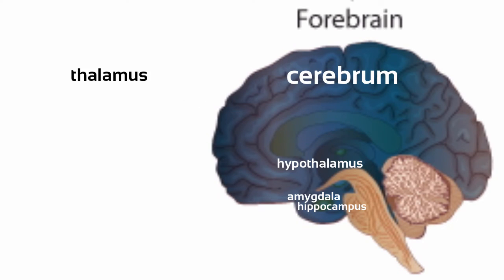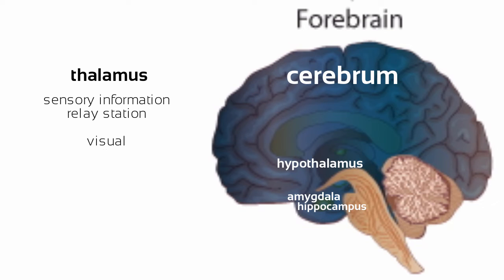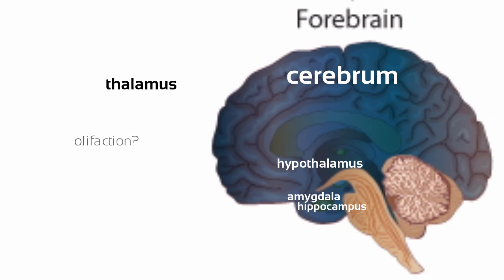The thalamus serves as a relay station for all our sensory information. For visual information to be processed, a specific area of the thalamus must direct it to the appropriate place in the cerebral cortex. The same goes for auditory information, as well as gustatory — which is taste — and proprioception, which is touch. But olfaction, which is smell, is different because it doesn't get routed through the thalamus.